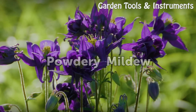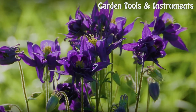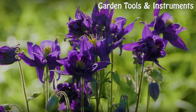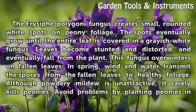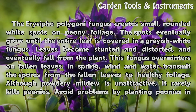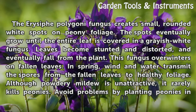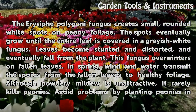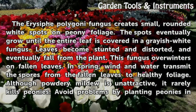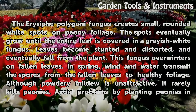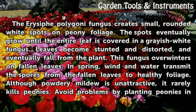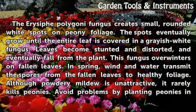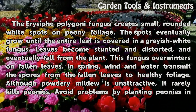Powdery Mildew. The Erysiphe polygoni fungus creates small, rounded white spots on peony foliage. The spots eventually grow until the entire leaf is covered in a grayish-white fungus. Leaves become stunted and distorted, and eventually fall from the plant.